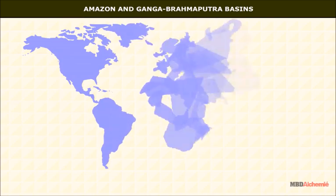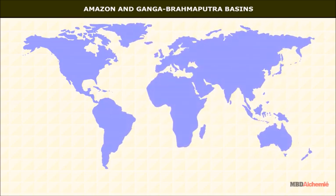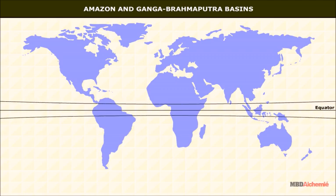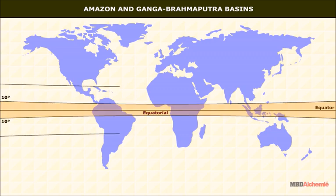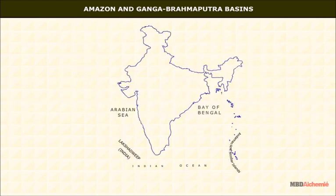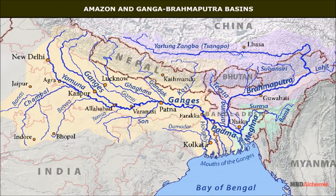The Amazon basin is in the equatorial region, between 10 degrees north and 10 degrees south, while the Ganga-Brahmaputra basin is in the subtropical region between 25 degrees north and 30 degrees north. The equatorial belt is a zone of intense heat. The interior of the continent where the Ganga-Brahmaputra basin lies is characterized by hot summers and cold winters.